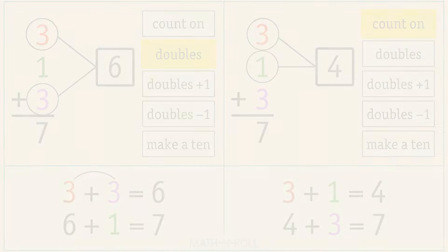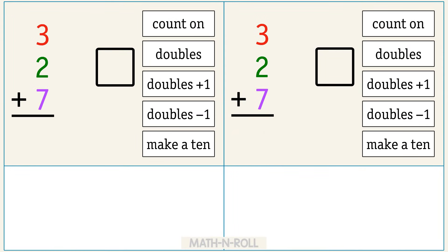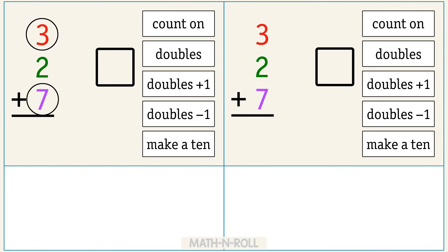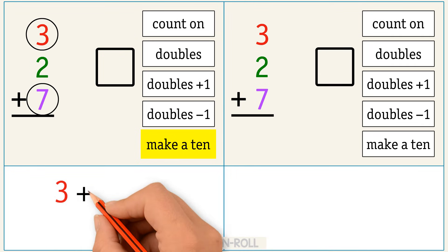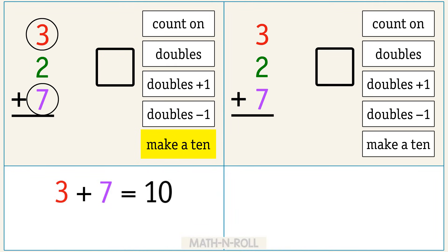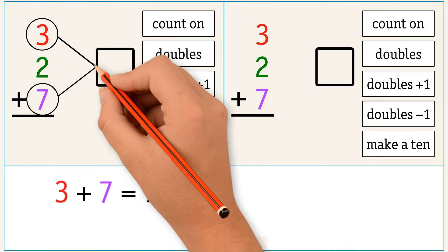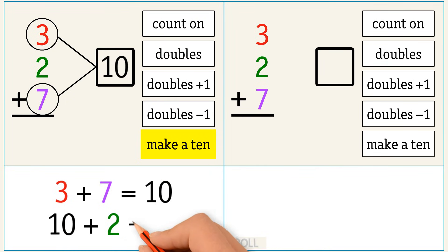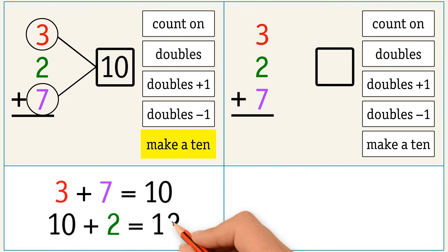Let's try another one. 3 plus 2 plus 7. Circle 3 and 7. We're going to use the make a 10 strategy to solve. 3 plus 7 equals 10. Now add 2 to 10 to get 12. 3 plus 2 plus 7 equals 12.